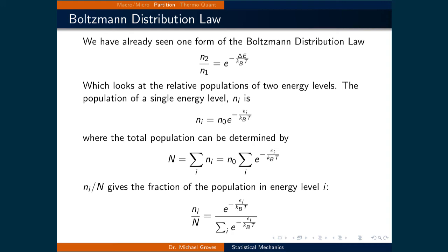Moving forward, we are now going to examine something called a partition function. First, we will re-examine the Boltzmann distribution law, which we have already used. Specifically, n2 over n1 is equal to e raised to the power of negative delta e over kb times t. This looks at the relative populations of two energy levels.